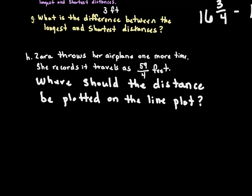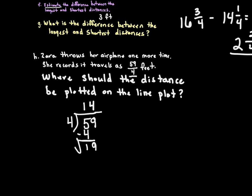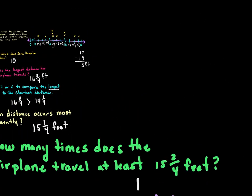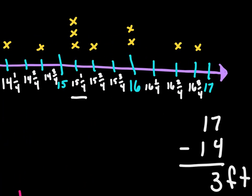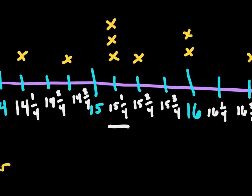Zara throws her airplane one more time and records it traveling 59-fourths feet. Where should this be plotted on the line plot? We convert 59-fourths by dividing: 4 goes into 59 — it goes 14 times with a remainder of 3. So 59-fourths equals 14 and three-fourths. That position is at 14 and three-fourths on the number line, marked in red to show it's the last throw.